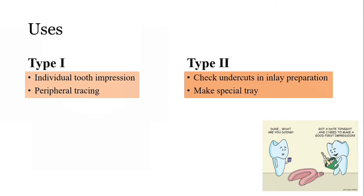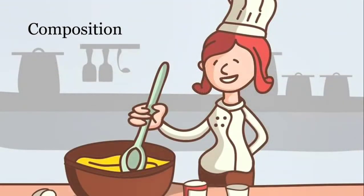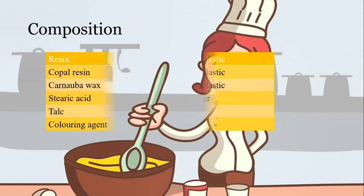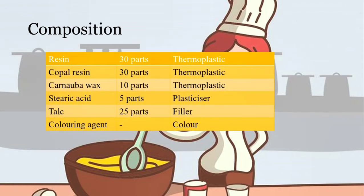What gives the material its ability to become soft and hard again? Resin, copal resin, and carnauba wax give it thermoplastic properties, allowing it to become soft when put in hot water. Stearic acid is a plasticizer that allows it to become more plastic and workable. Talc acts as a filler, providing strength and reducing plasticity. Coloring agents like rouge are used to give it an aesthetic appearance.